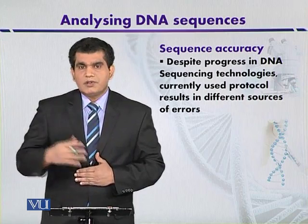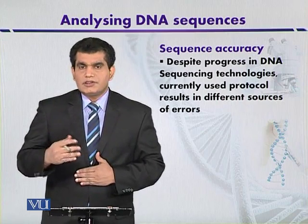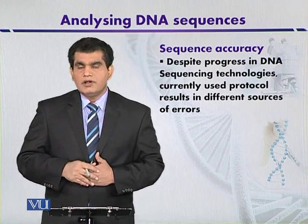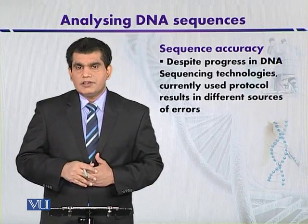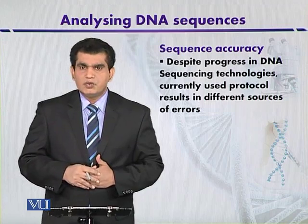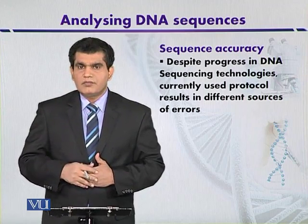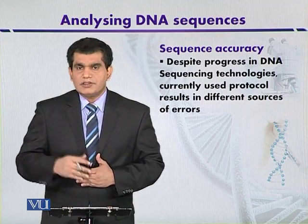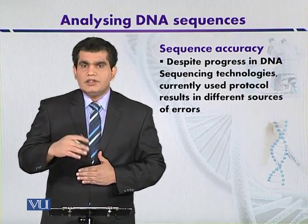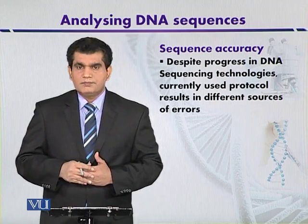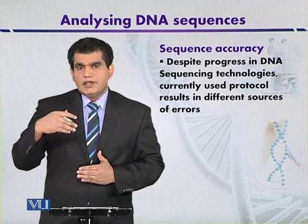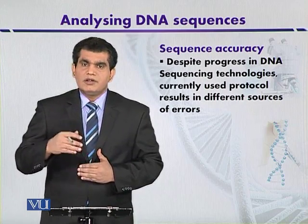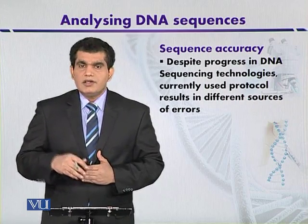I can explain two examples related to sequencing accuracy. The first study was conducted in the early 1990s, around 1992, by the group of Wilson. Wilson and co-workers analyzed a stretch of mouse DNA sequence of approximately 96 kilobases in size. They compared around 288 DNA sequences after cloning them into a vector, related to this particular DNA stretch.